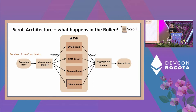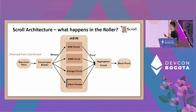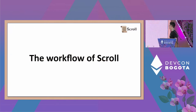Worth noting: our coordinator dispatches blocks to different provers. Those rollers generate proofs in parallel for different blocks — they are not competing for the same block. This results in better utilization of the prover network, because all provers are doing something useful and not doing redundant work. Now let's look at how your transaction is processed on Scroll and the workflow from a timeline perspective.